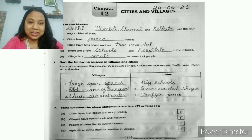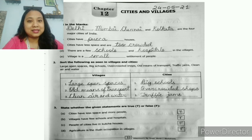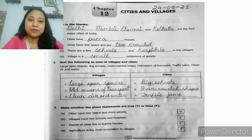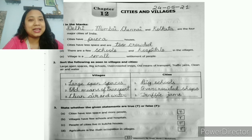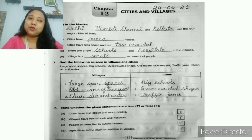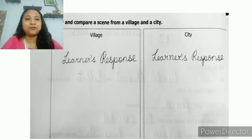Question three C: People of cities live in kaccha houses — False. People in the cities live in pakka houses. Question three D: Agriculture is the main occupation in villages — True, because as we learned, 70 percent of the population of rural India depends on agriculture for their livelihood. Moving on to page number 34.